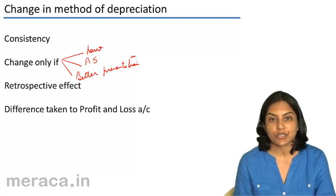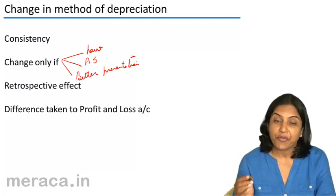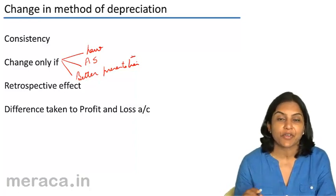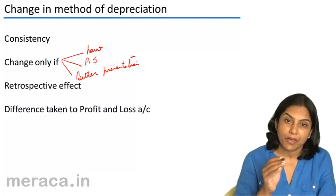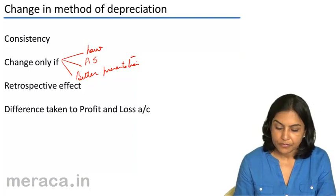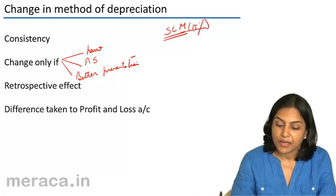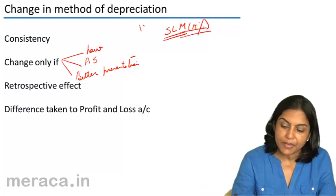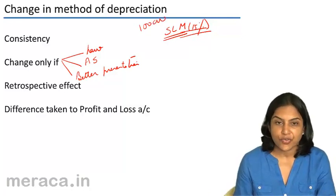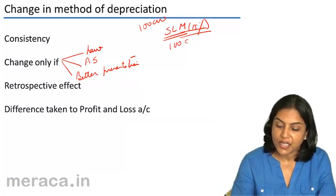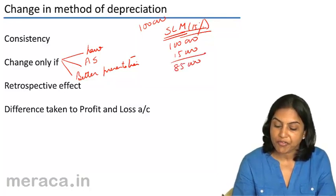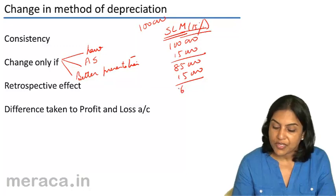When we change the method of depreciation, the effect is supposed to be with retrospective effect — from day one. For example, suppose we were following the straight line method of depreciation at a rate of 15% and the depreciable amount is 1 lakh. Under straight line method, we would have charged depreciation of 15,000, leaving a balance of 85,000, then another 15,000, giving a balance of 70,000 after two years.